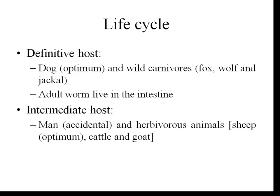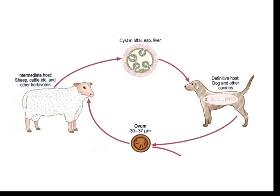The adult worm lives in the small intestine of these definitive hosts. The intermediate host includes herbivorous animals like sheep, cattle, goat, and pig. Man acts as an accidental or dead-end host. Herbivorous animals get infected by eating food and water contaminated with dog feces containing Echinococcus granulosus eggs. Once the eggs reach the intestine, the hexacanth embryo — the oncosphere — comes out, penetrates the intestinal wall, reaches the portal circulation, and from there goes to the lungs and other parts of the body. In these viscera, the hexacanth embryo is converted into the hydatid cyst.